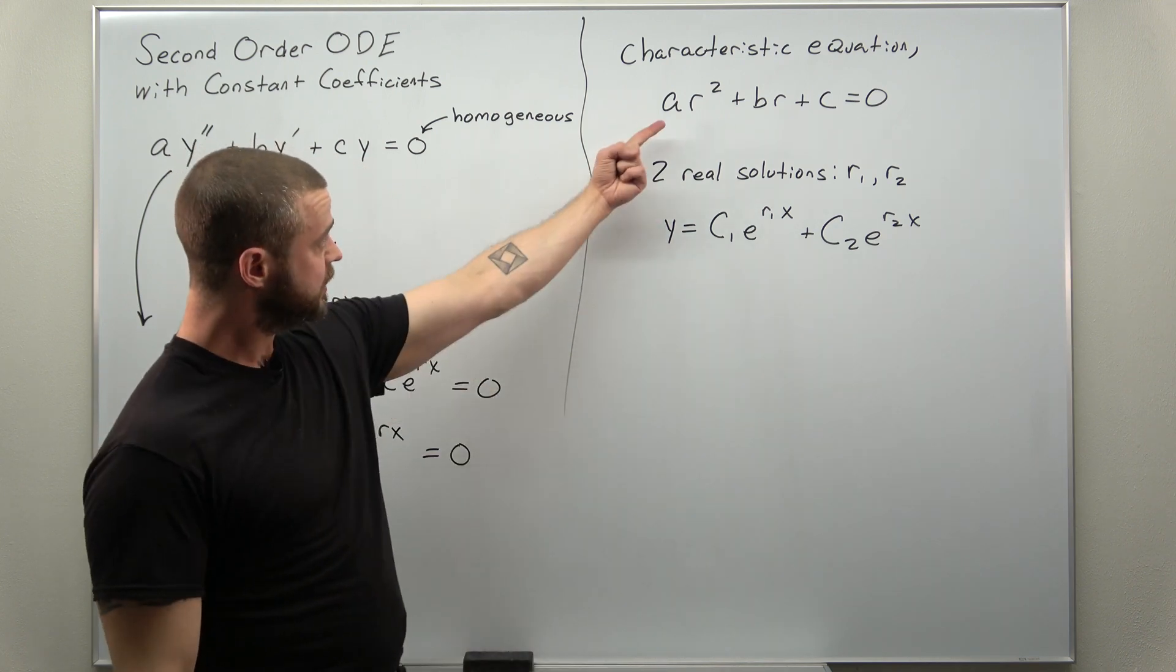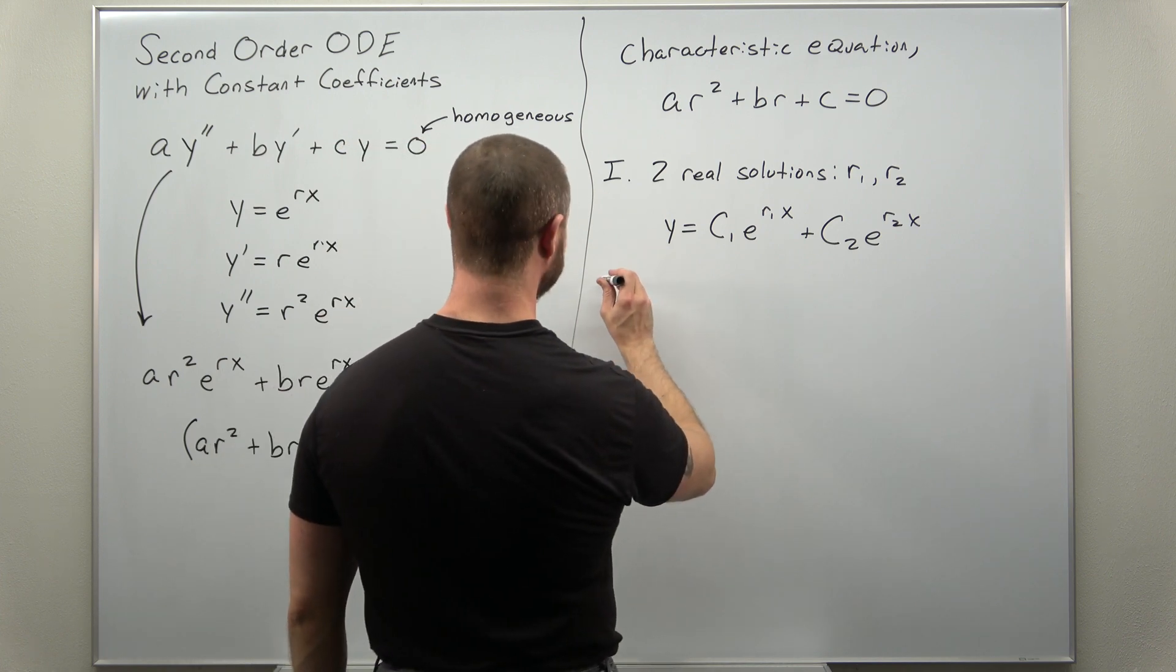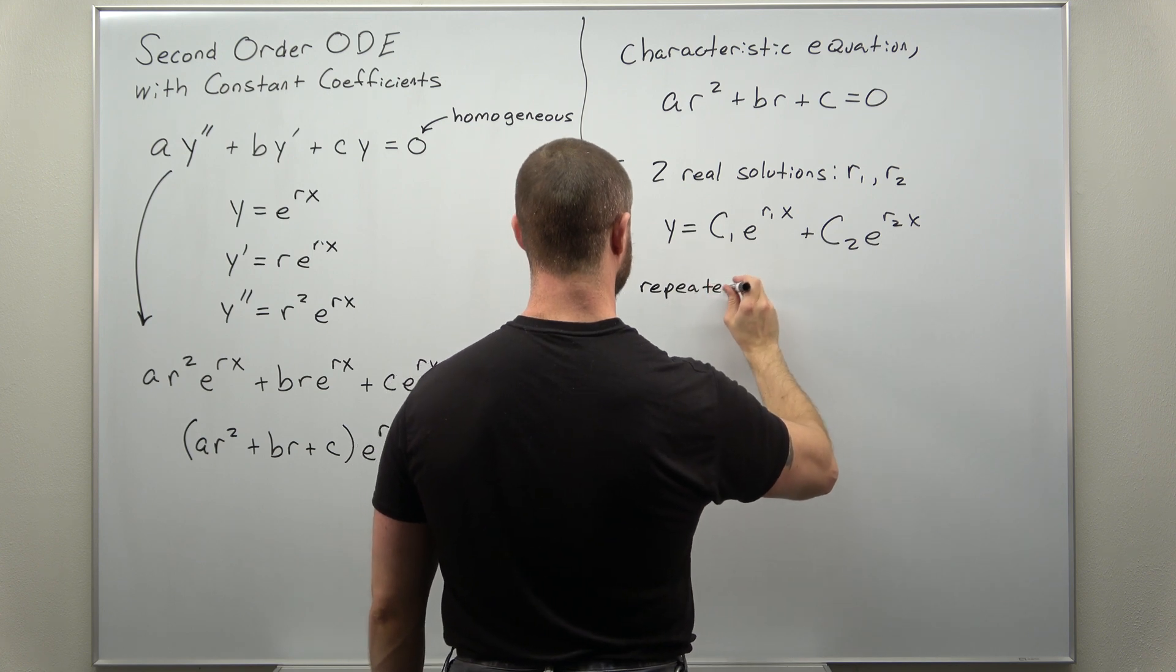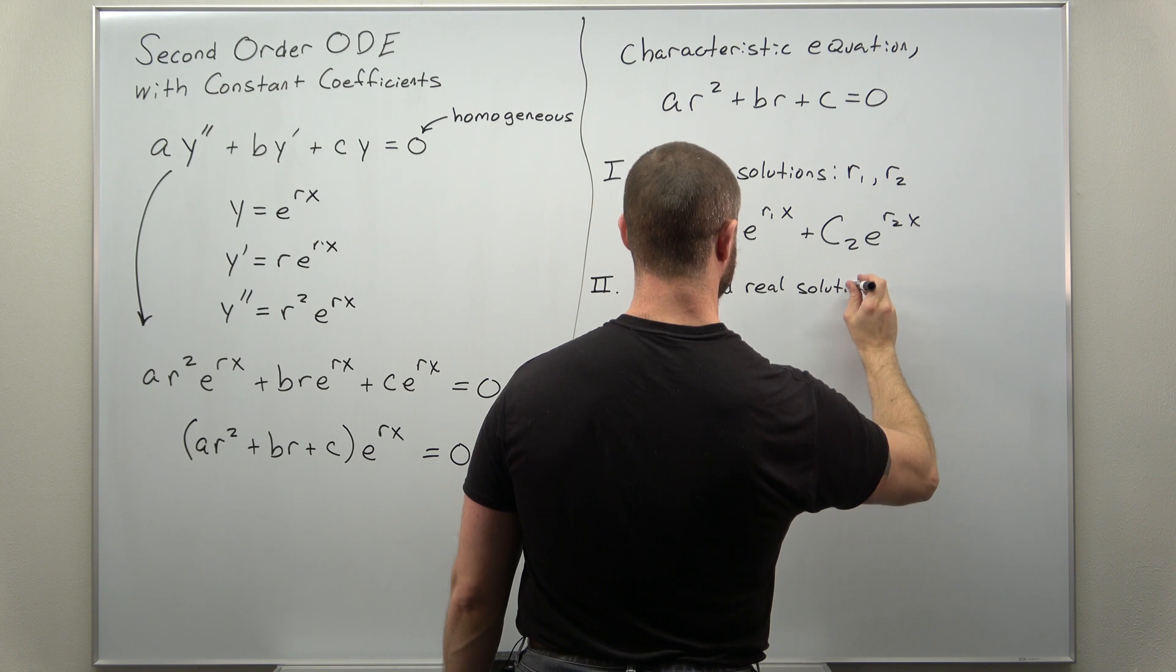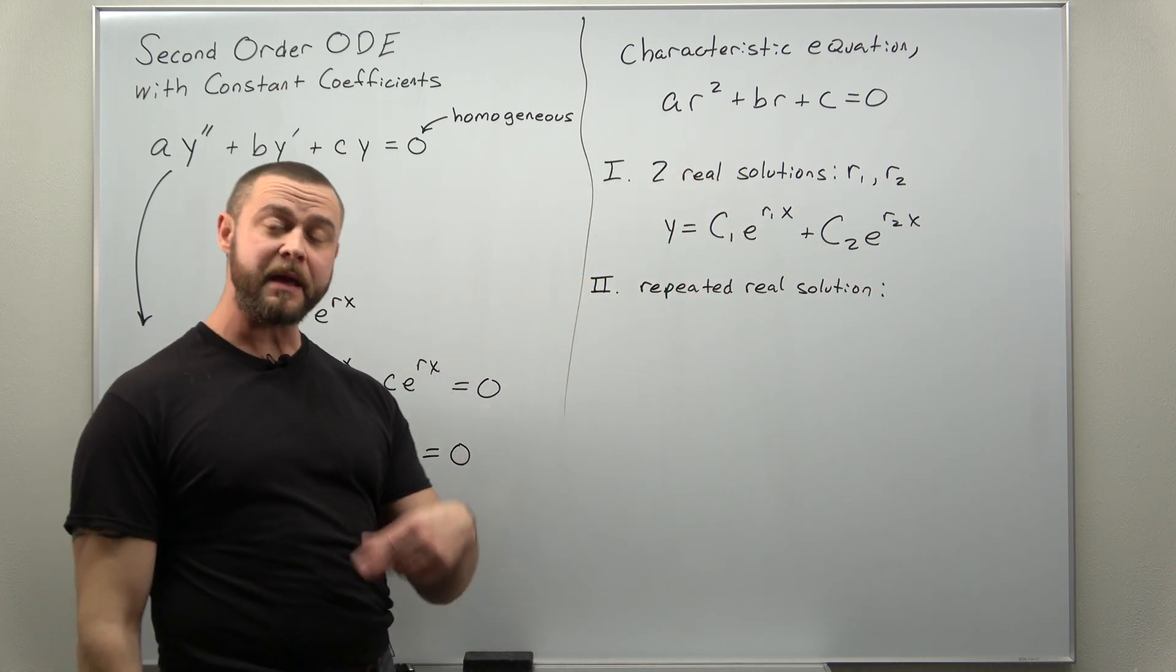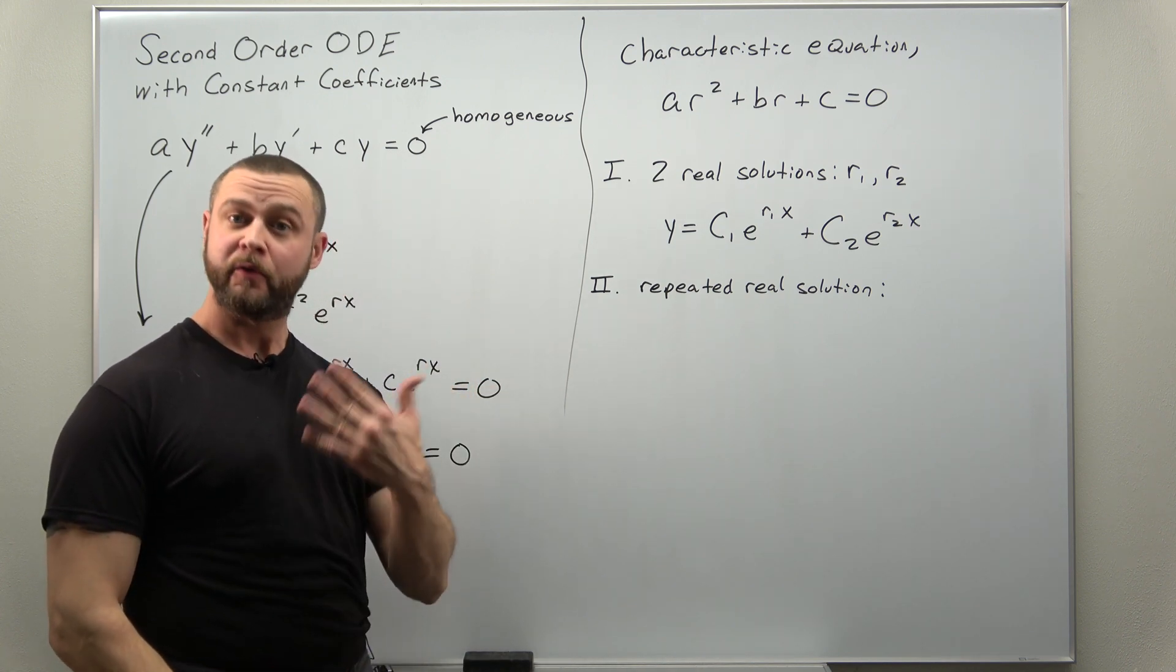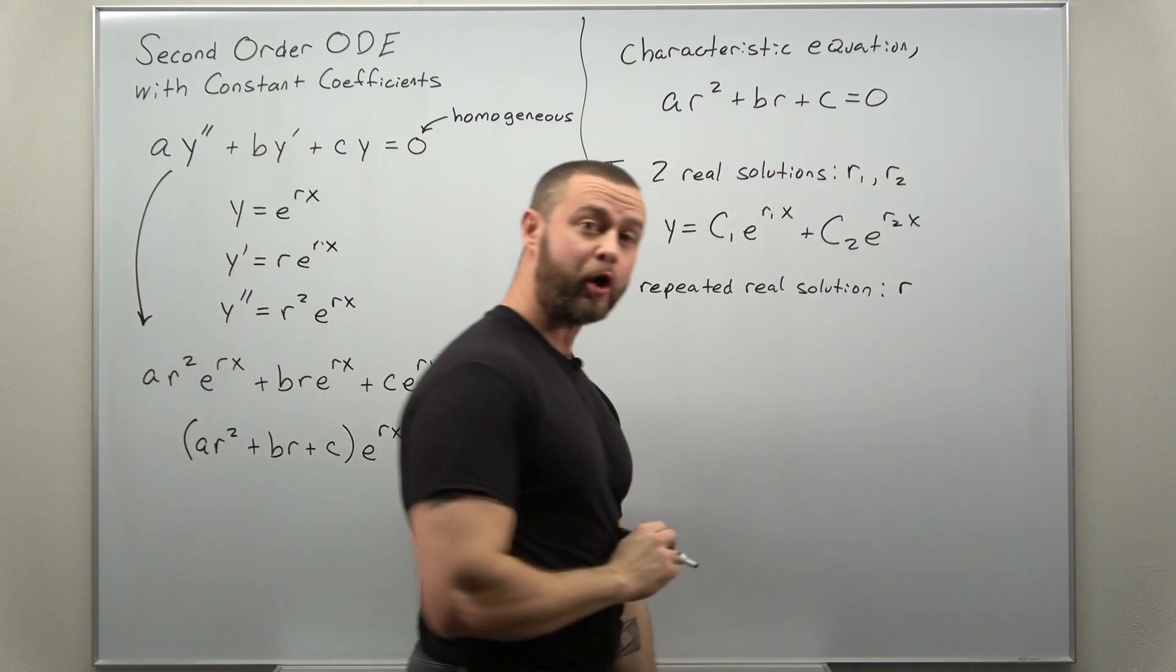Now there's another possibility to solving that quadratic equation for r. You could get a repeated real solution. And that's basically if you factor this maybe you have a term that's squared giving you one value for r. So we're going to call that a repeated root, and let's call that r.